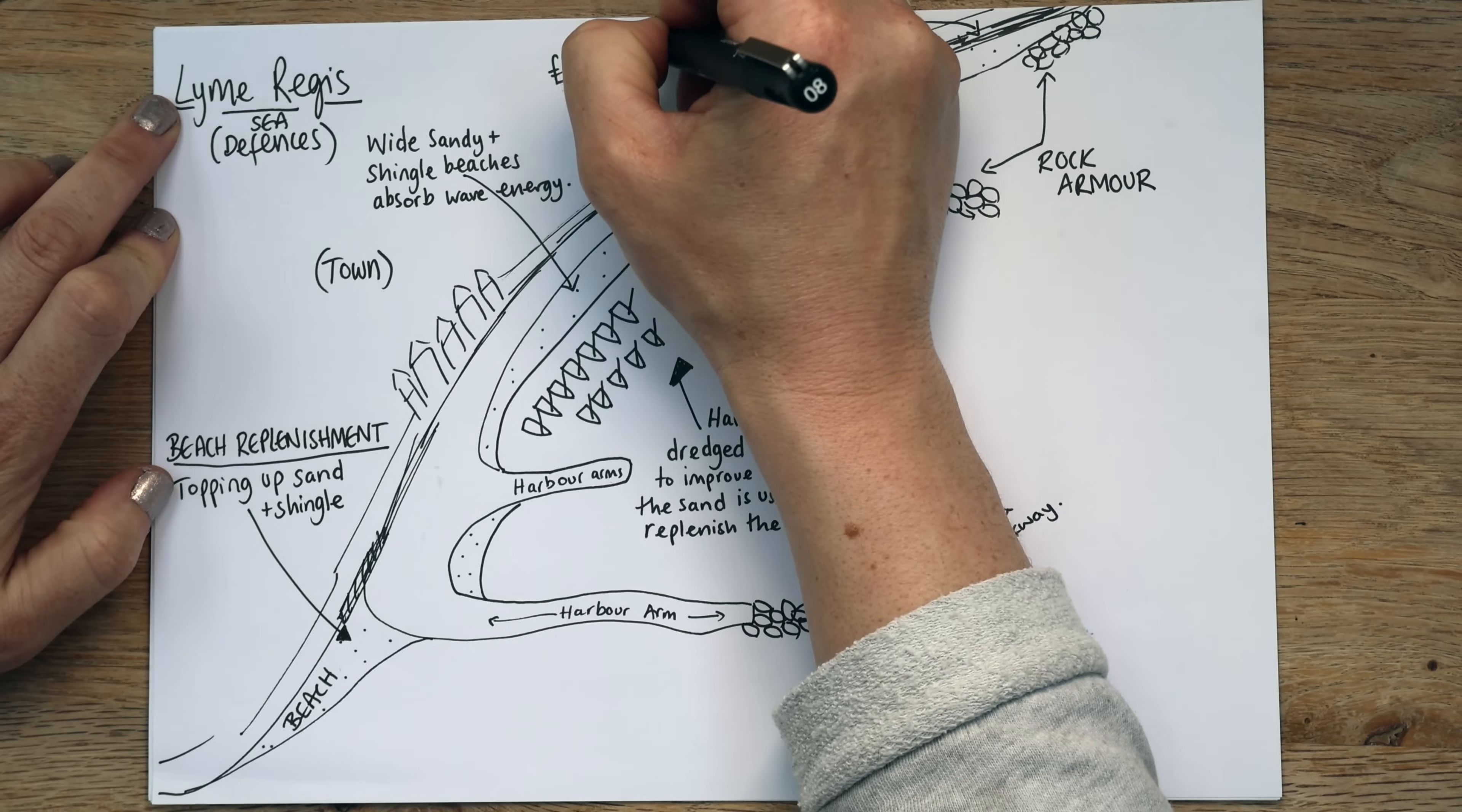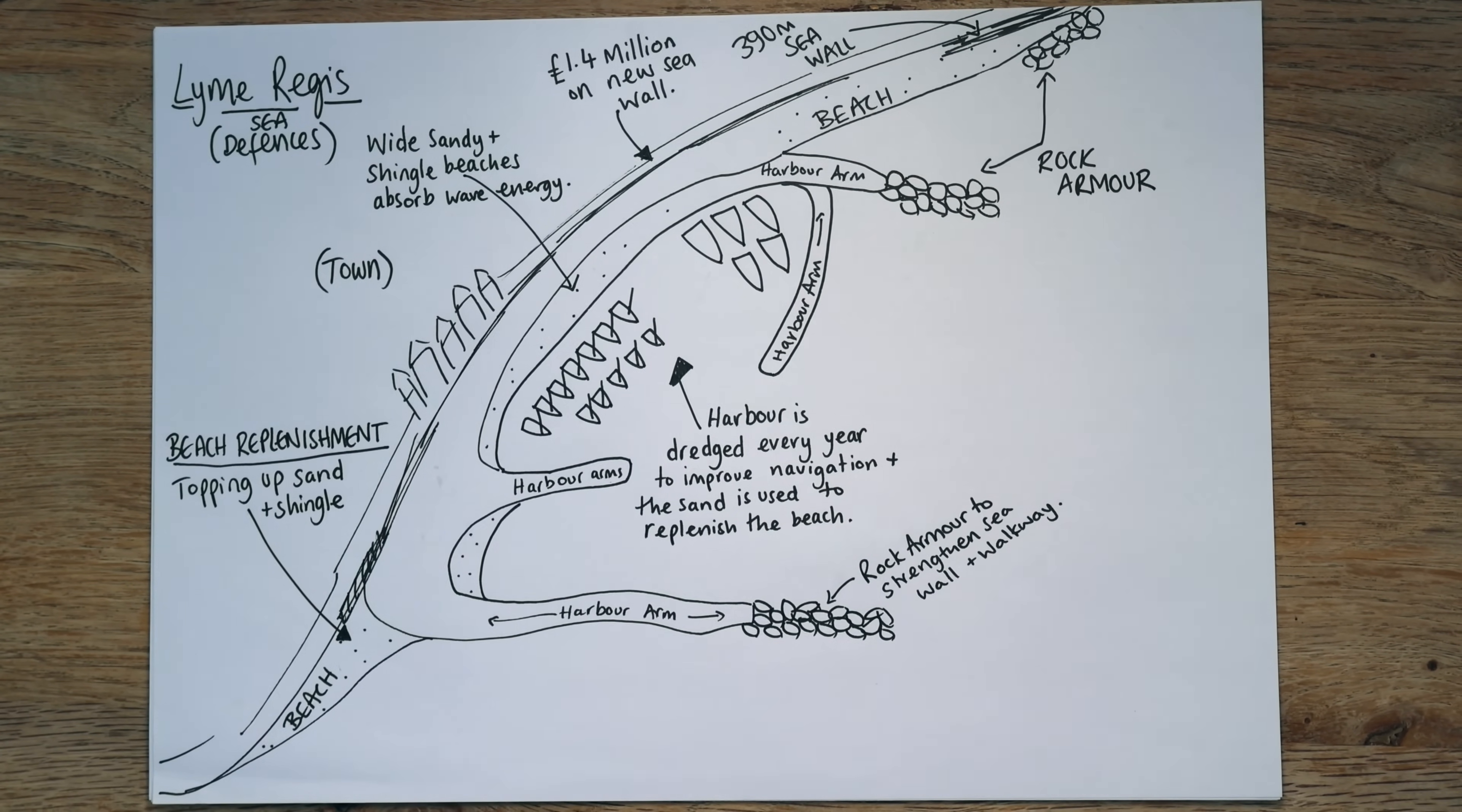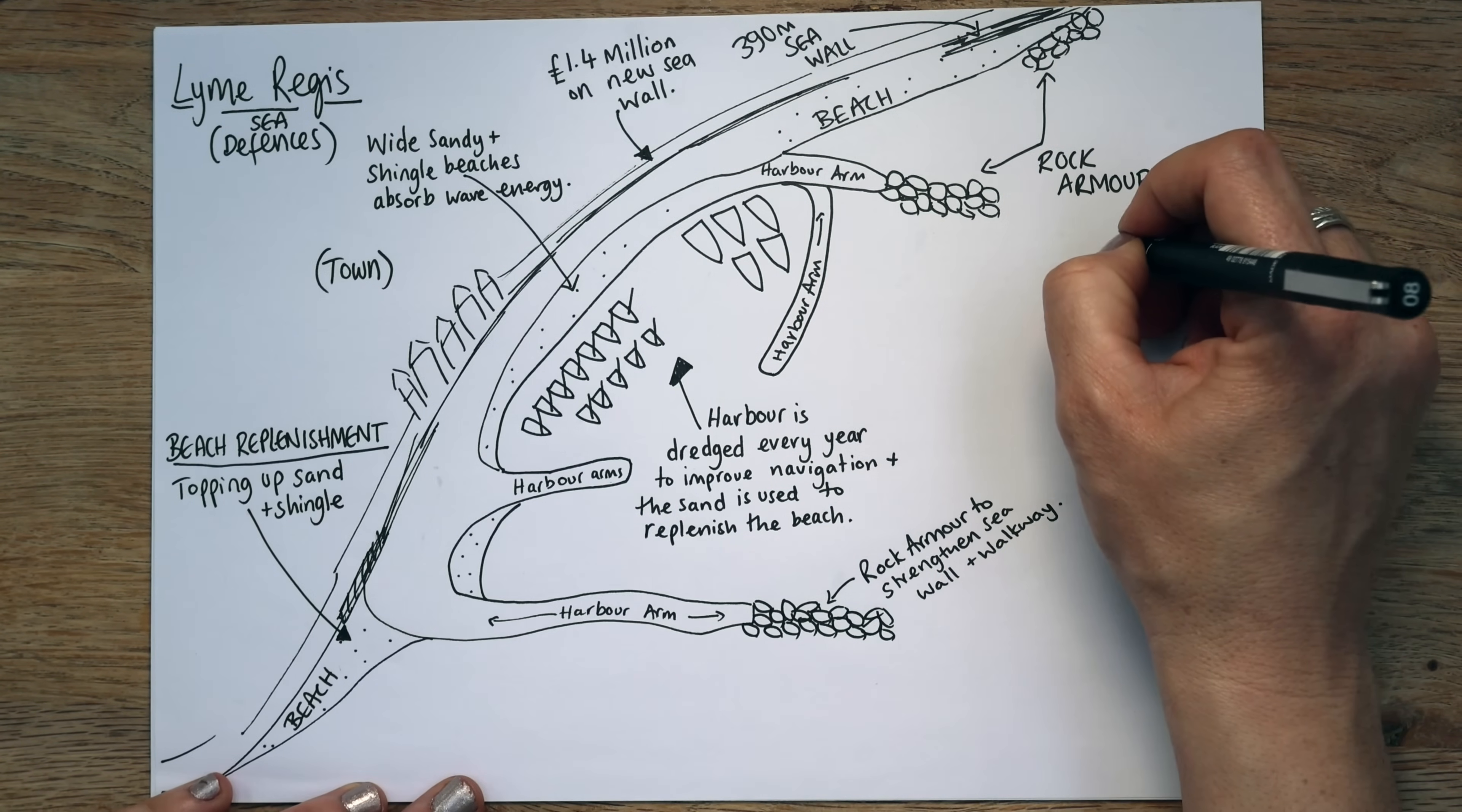And recently they spent £1.4 million, so a lot of money, on new sea wall. Sea wall's really effective, but it's also really expensive. So it's a bit of a difficult one, really. A lot of times councils and the Environment Agency don't have the money for it. But if you have got it and you can make it work, it's excellent. It's a really good resource, especially used with rock armour. Let's draw a smiley face, and talk about some of the benefits.